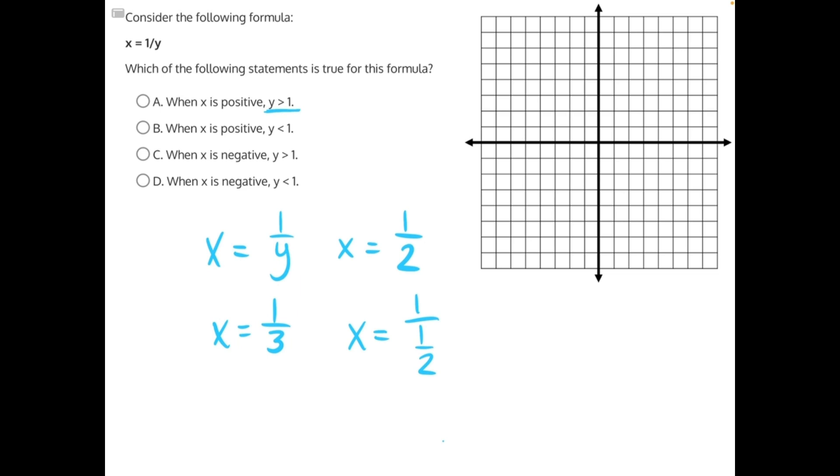Anytime we are dividing with fractions, remember we're multiplying by a reciprocal. Keep your first fraction, change from division to multiplication, and then flip your fraction. So now we have x is equal to 1 times 2, which is just 2.